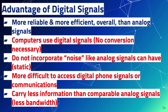With analog signals, someone could jump into the line and listen to a conversation — even a home landline is vulnerable if someone picks up or accesses the line from outside. Digital signals are much harder to intercept. However, digital signals carry less information than comparable analog signals — less bandwidth — which is a term we'll be discussing more soon.